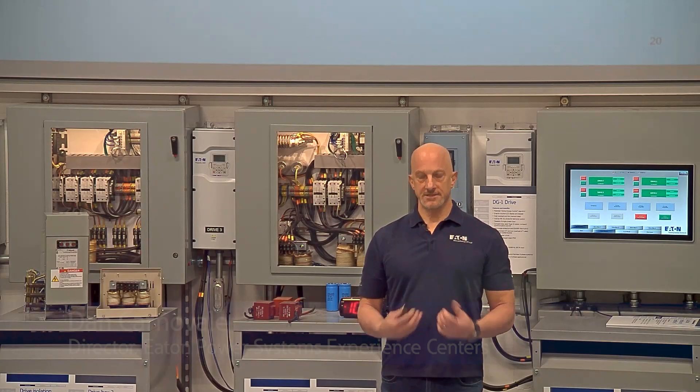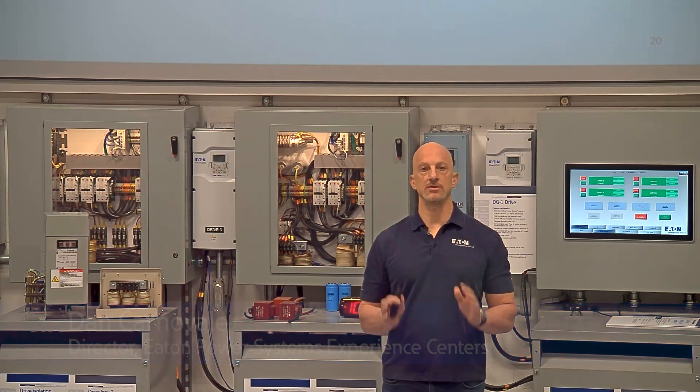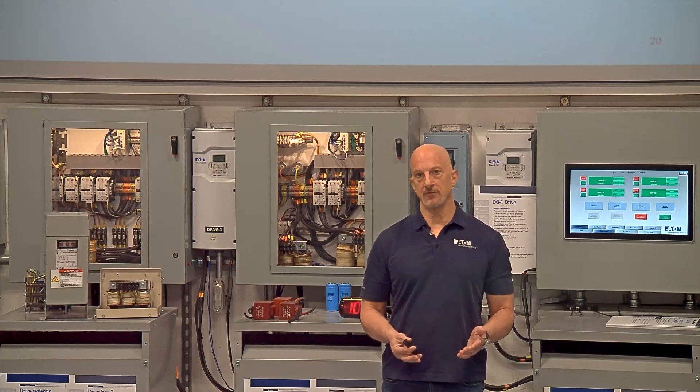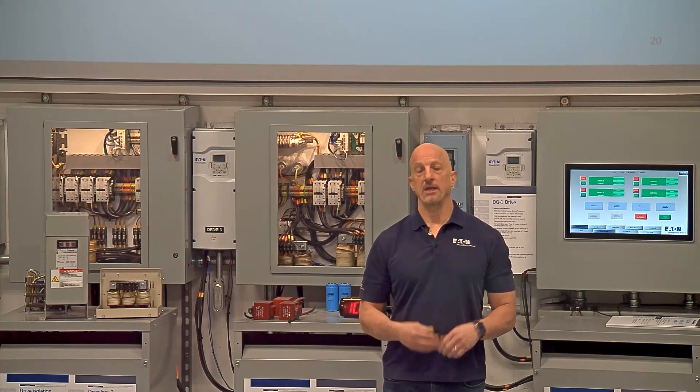A lot of times you might have existing power factor correction capacitors and you find that you have a lot of harmonics or you created a resonant condition. So can you change an existing power factor correction capacitor into a harmonic filter?